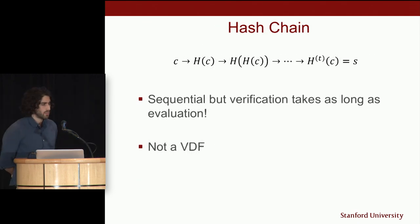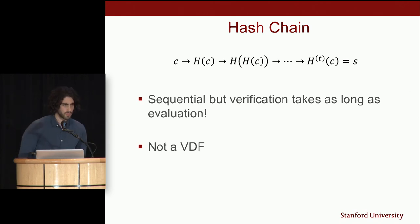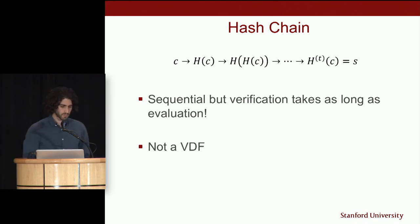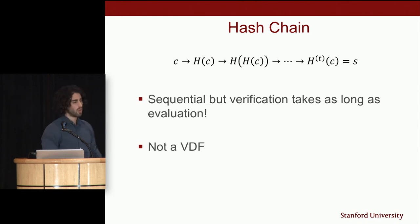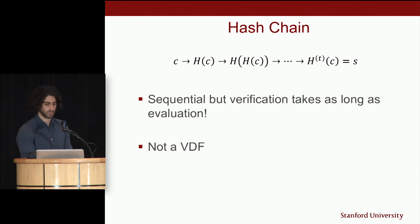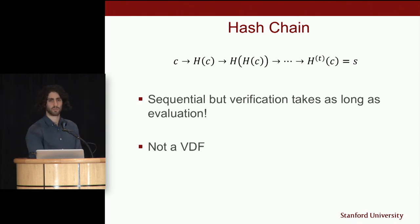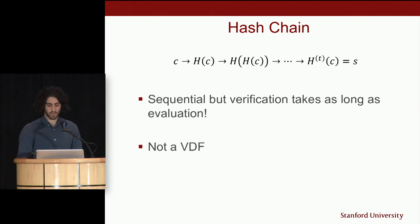A hash chain — iterating a hash function t times on a given input — is an example of a sequential function that is not a VDF. There's no way to speed up this computation even given parallel resources. The problem is that it's not efficiently verifiable: verification takes just as long as the evaluation.